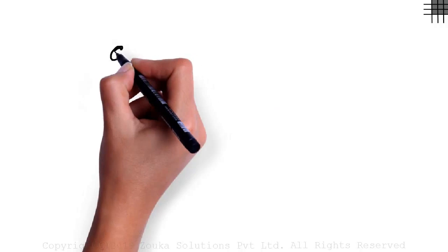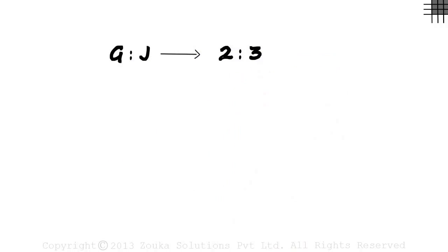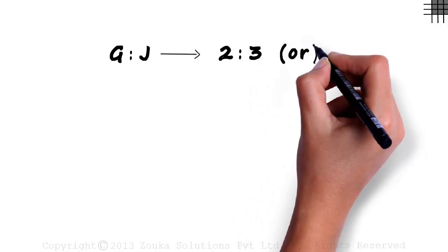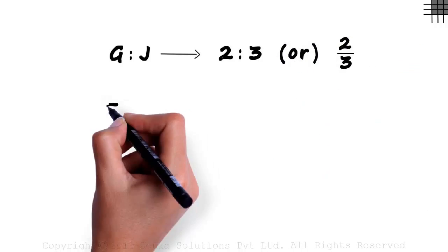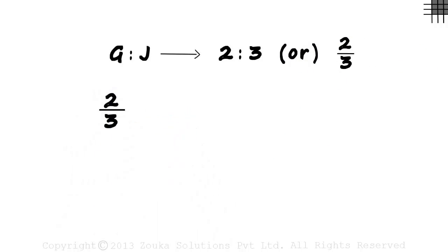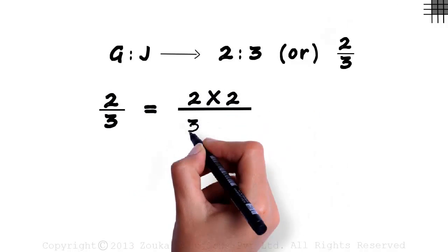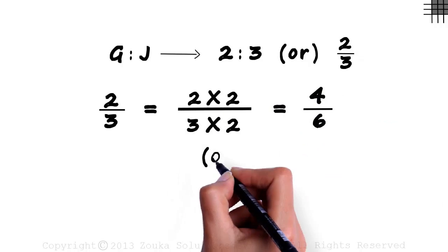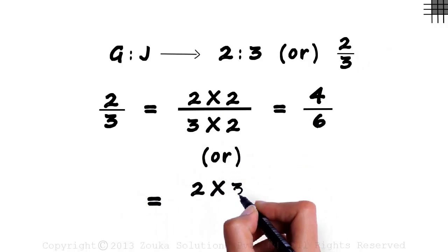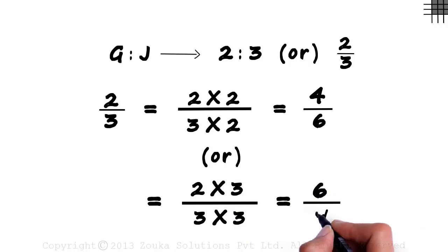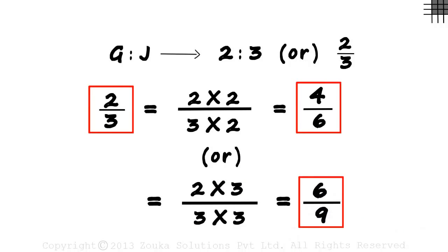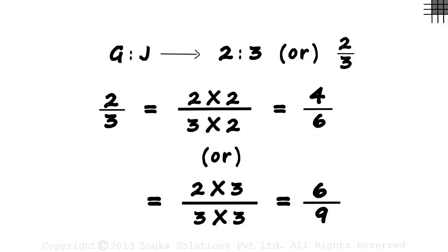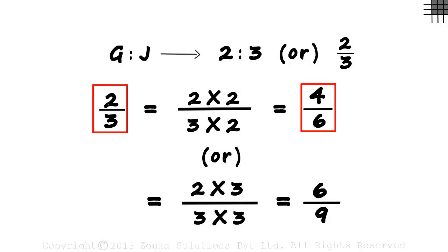The ratio of the number of chocolates Gaurav received to the number of chocolates chair received is 2 to 3, which can also be written as 2 by 3. We have seen that 2 by 3 can be written in different ways. We can multiply the numerator as well as the denominator by 2 to get 4 by 6, or by 3 to get 6 by 9. All these three ratios have the same value. If we multiply the numerator and the denominator by the same value, the ratio remains unchanged.